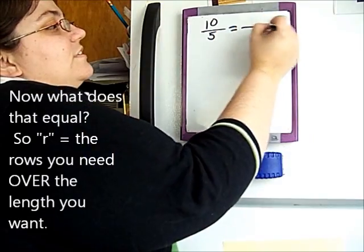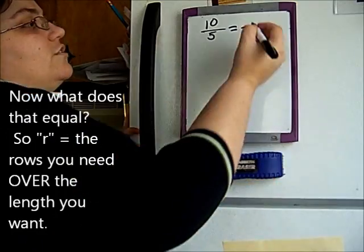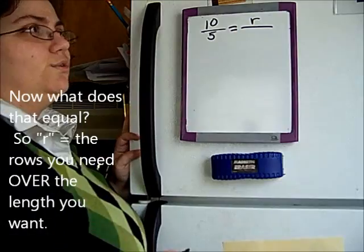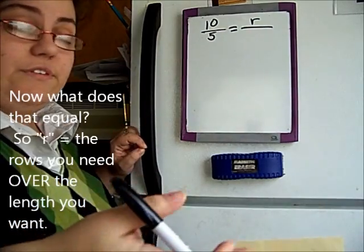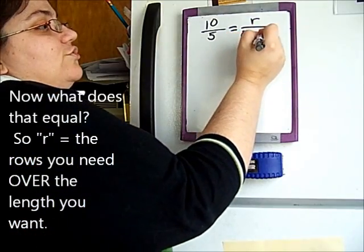So now what you're going to do is you're going to say, well, what does that equal? So then you're going to say, okay, I need to know how many rows, so you can put like an R up here, for how many rows do I need to get to whatever amount of inches you want, like for example, if you want 60 inches because you're doing a scarf.